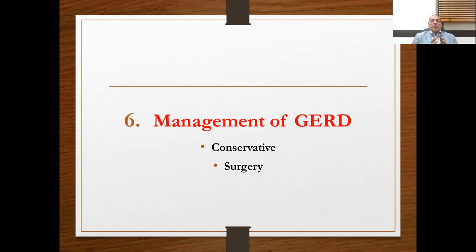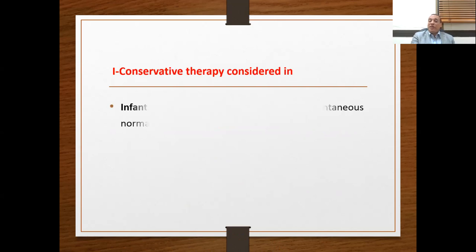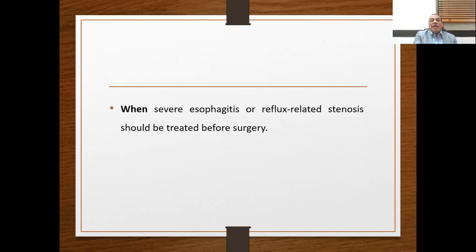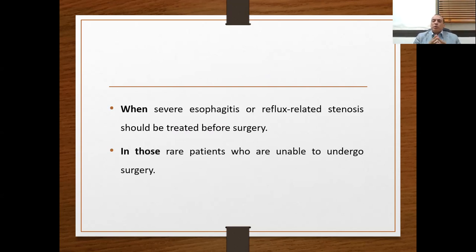Regarding management of GERD: we have two arms — conservative and surgical. Conservative therapy is indicated in infants and young children because spontaneous normalization is expected. However, it is unlikely if there are pathological conditions like hiatal hernia, volvulus, obstructions, tracheoesophageal fistula, congenital diaphragmatic hernia, mental disability, or non-healing. Also, when severe esophagitis or reflux-related stenosis must be treated before surgery, and in rare patients unable to undergo surgery, conservative therapy is indicated.